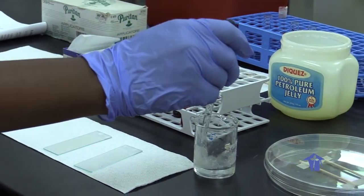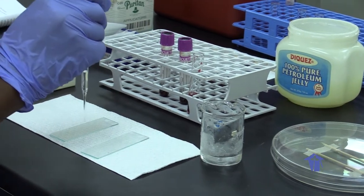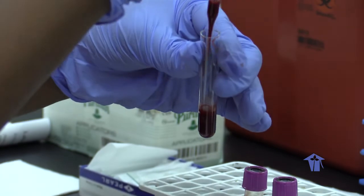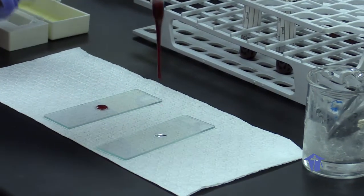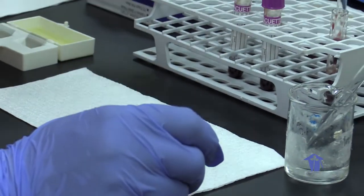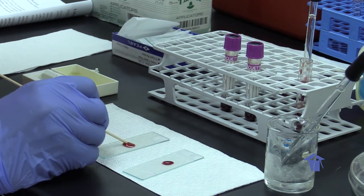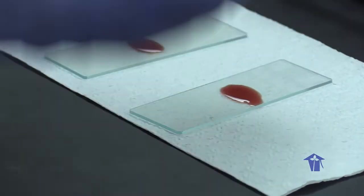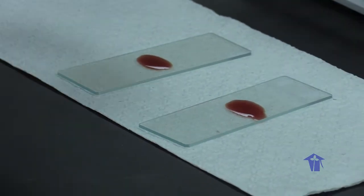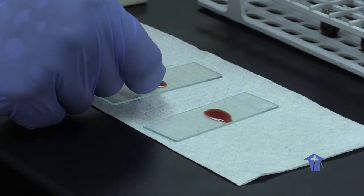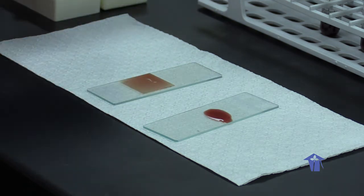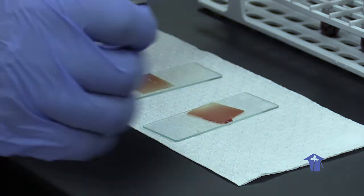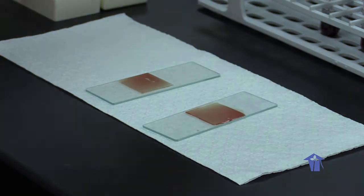According to the SOP, we need to drop one drop of the sodium metabisulfite on a microscope slide to one drop of the patient sample. And we mix. And we cover with a coverslip. Then we seal the ends with Vaseline.